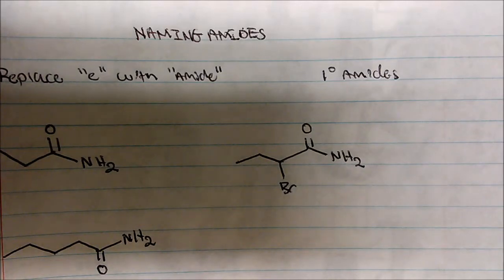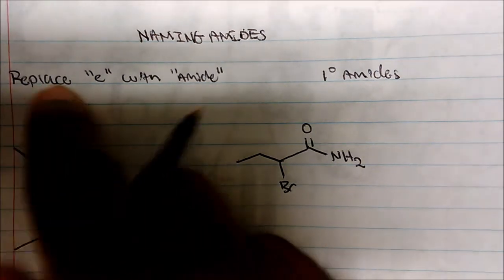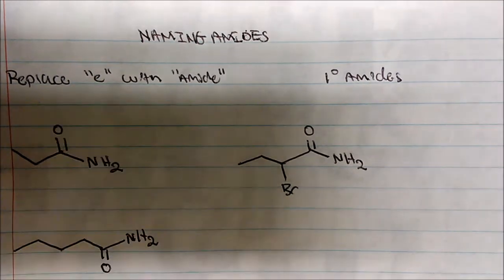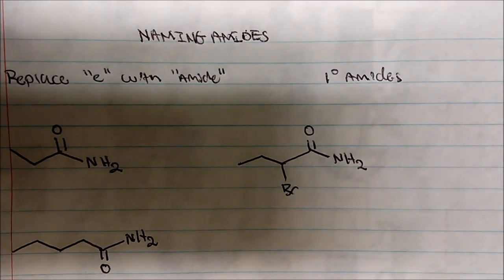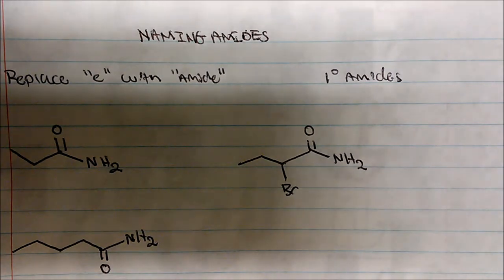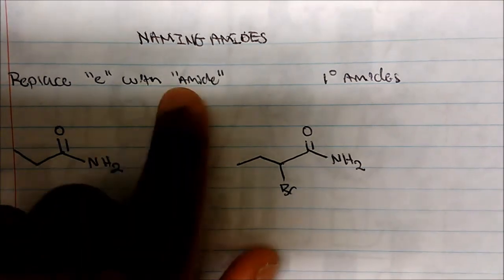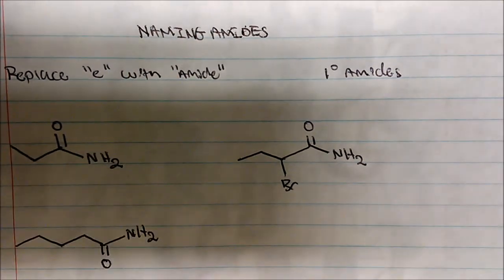In this video we're going to talk about the nomenclature of amides. Starting with primary amides: the rule is that we take the longest continuous chain, drop the -e, and add -amide. So if it's hexane, we get hexanamide. If it's ethane, we drop the -e and get ethanamide.